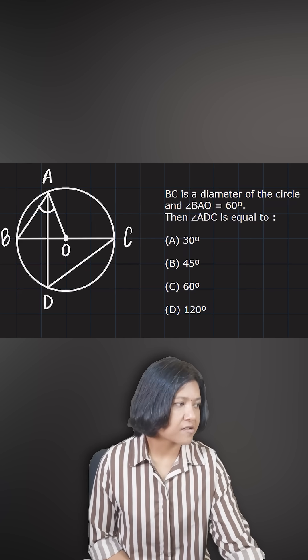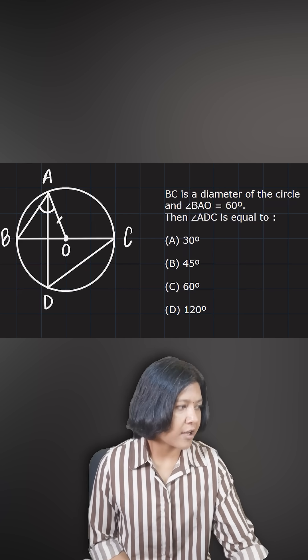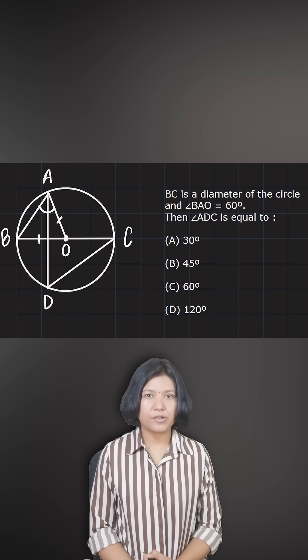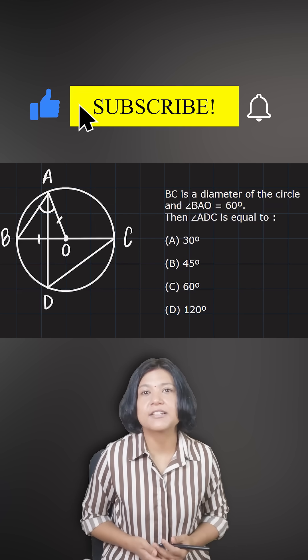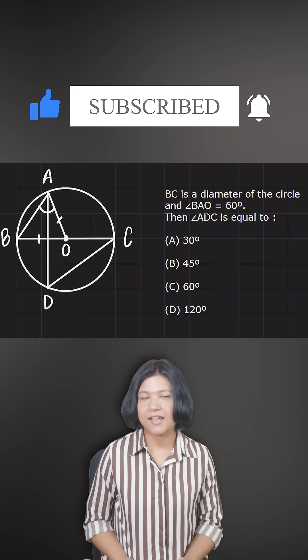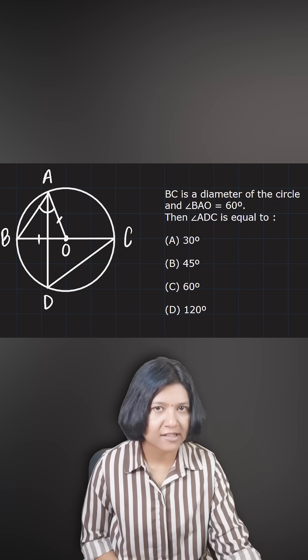Now if you look at this triangle AOB, AO and OB, they are both radius. So you have the possibility, every time you have a possibility of making an isosceles triangle inside a circle, provided you have the lines coming from the center.